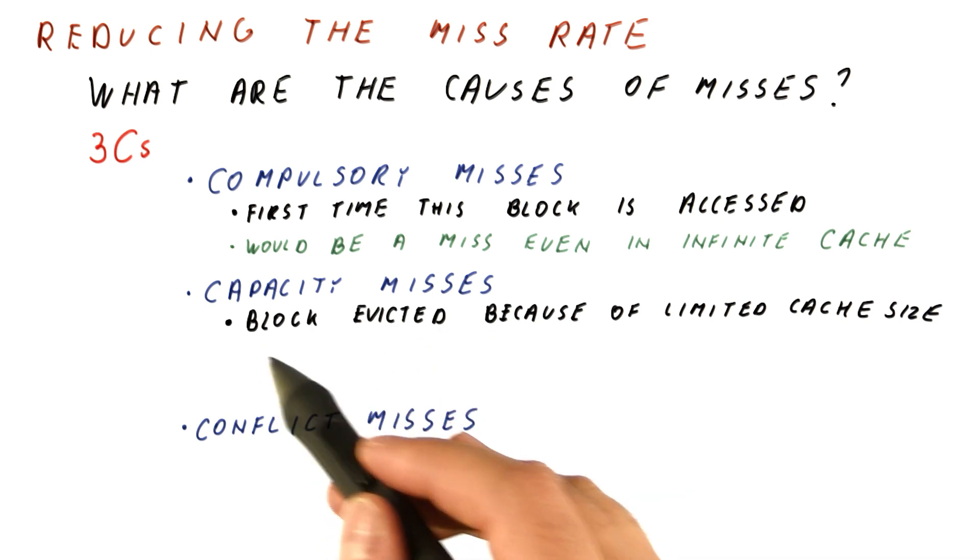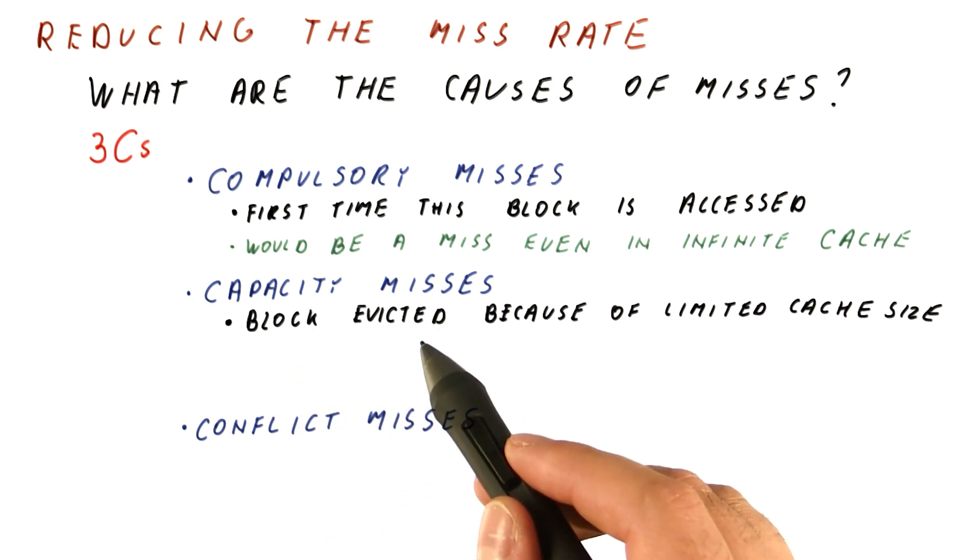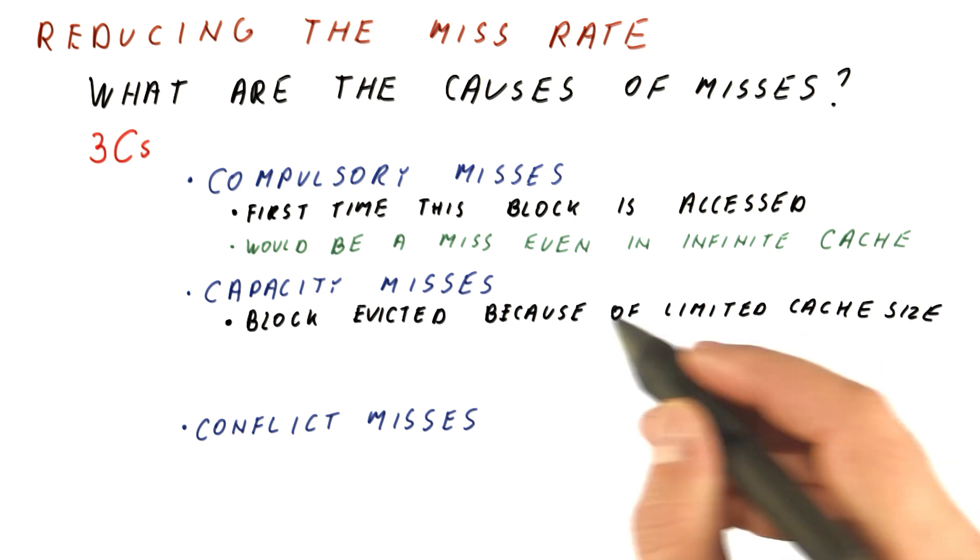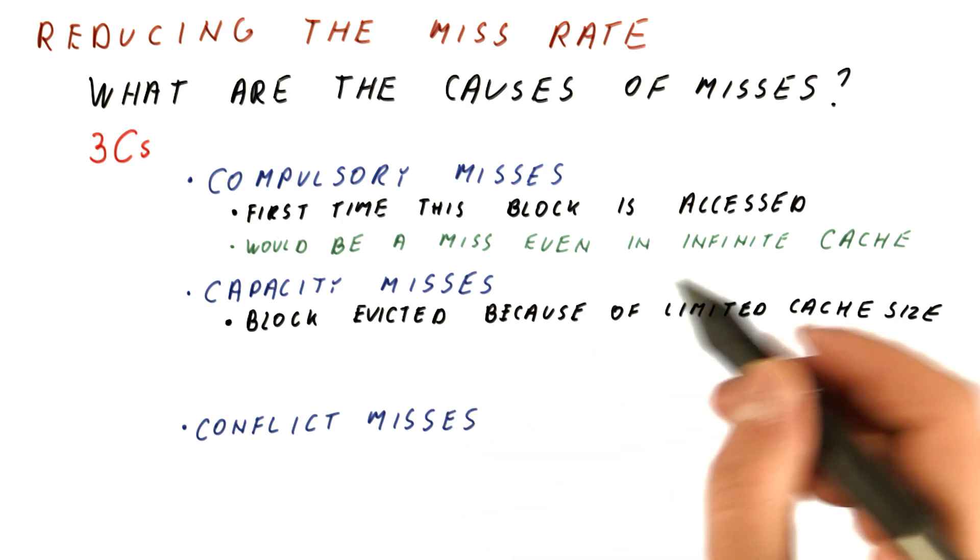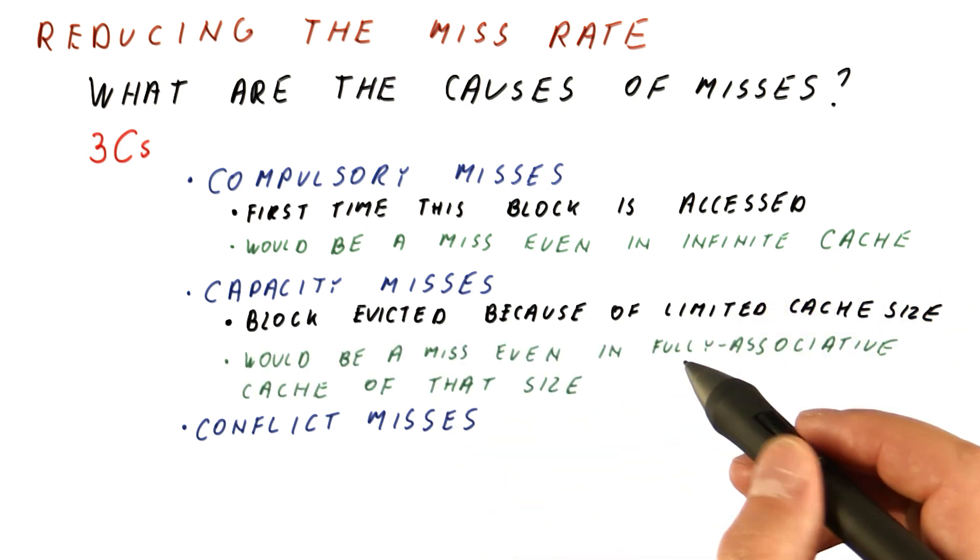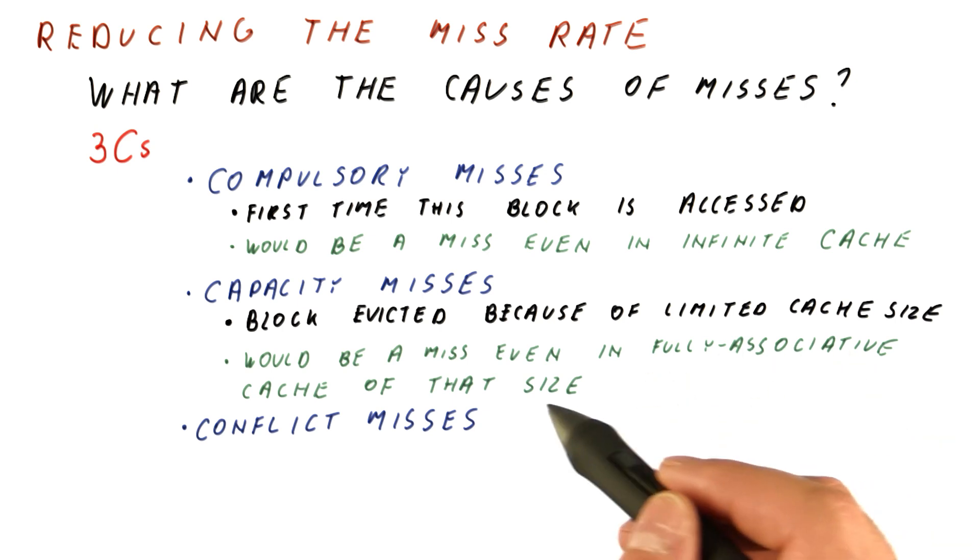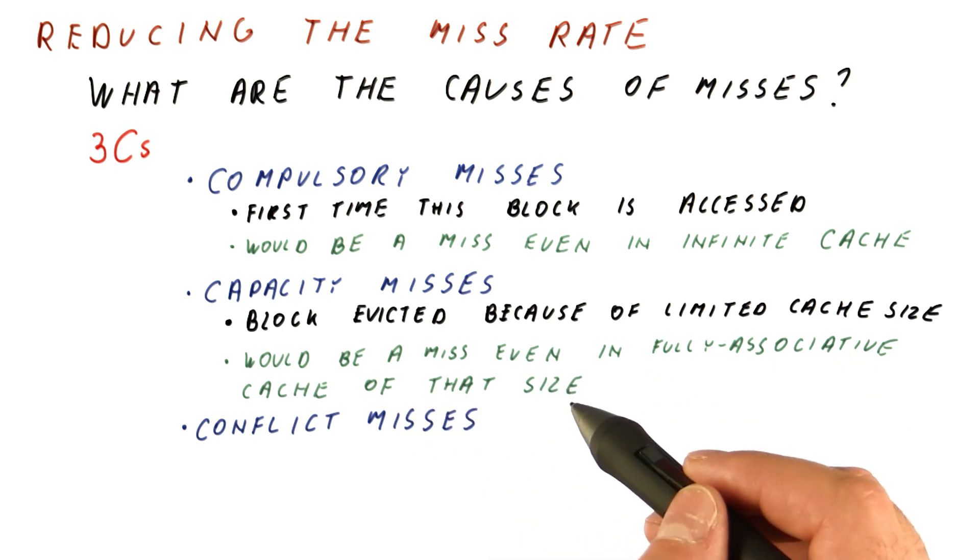Capacity misses are misses that we have on blocks that were in the cache, but were evicted because we didn't have enough room in the cache, because the cache is of a finite size. These are misses that we would not have in an infinite cache, but capacity misses would be misses even in a fully associative cache of the given size.